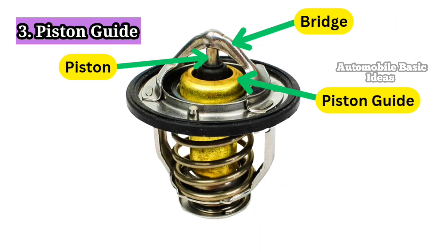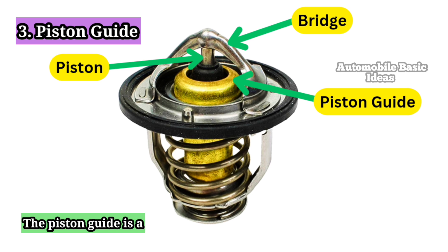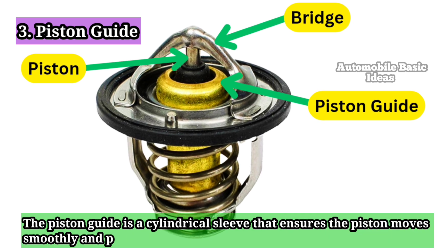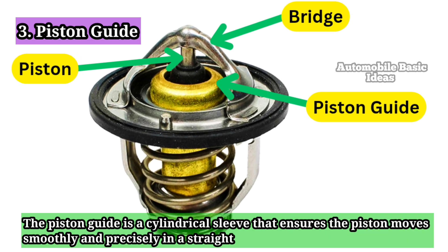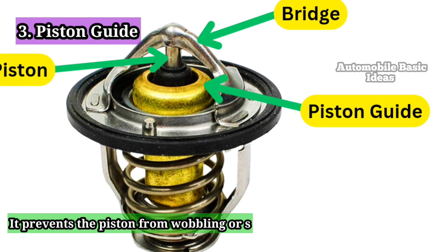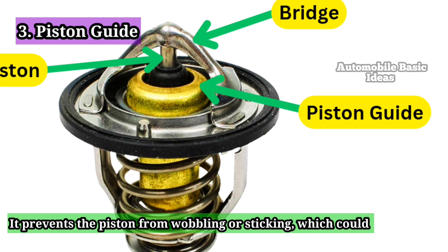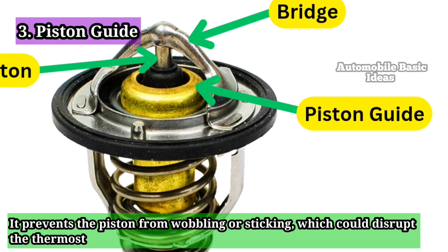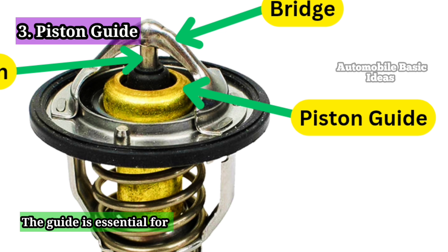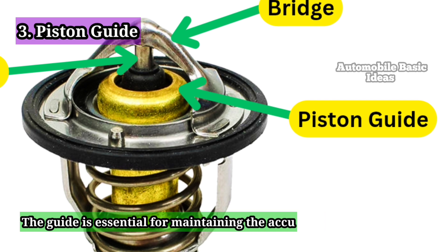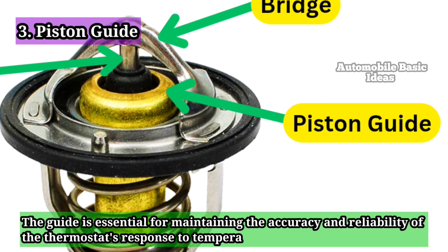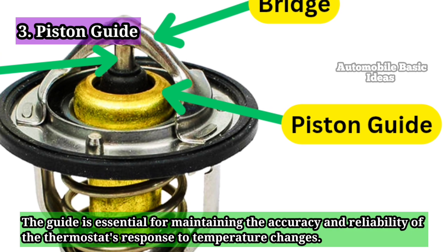Piston Guide: The piston guide is a cylindrical sleeve that ensures the piston moves smoothly and precisely in a straight line. It prevents the piston from wobbling or sticking, which could disrupt the thermostat's operation. The guide is essential for maintaining the accuracy and reliability of the thermostat's response to temperature changes.